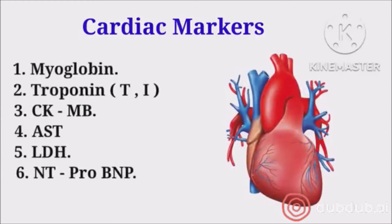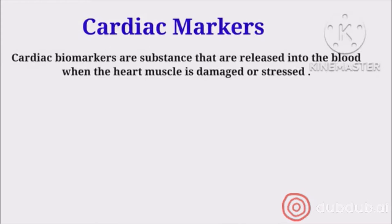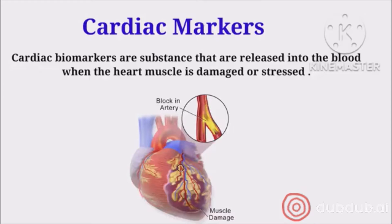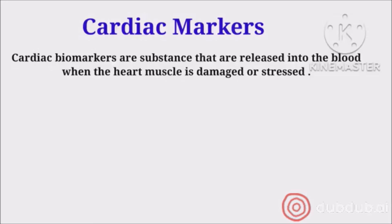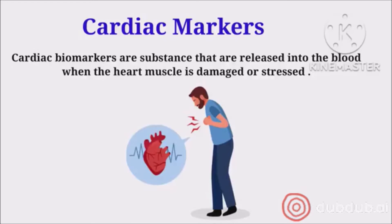Hello friends, welcome to my new lecture on cardiac markers, also called cardiac biomarkers. These cardiac biomarkers are substances that indicate the condition of the heart. They are present inside the heart muscles, and whenever the heart muscles are damaged or injured, these markers come out of the heart cells and enter the bloodstream. So if a person has chest pain or gets a heart attack, we can determine when it happened.